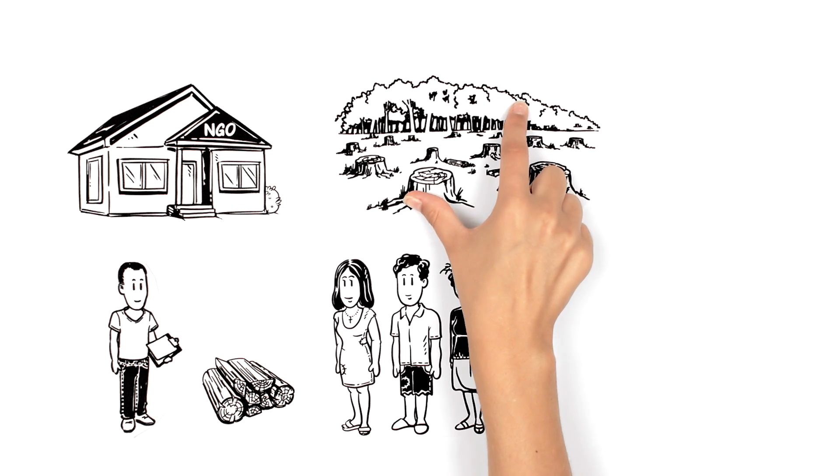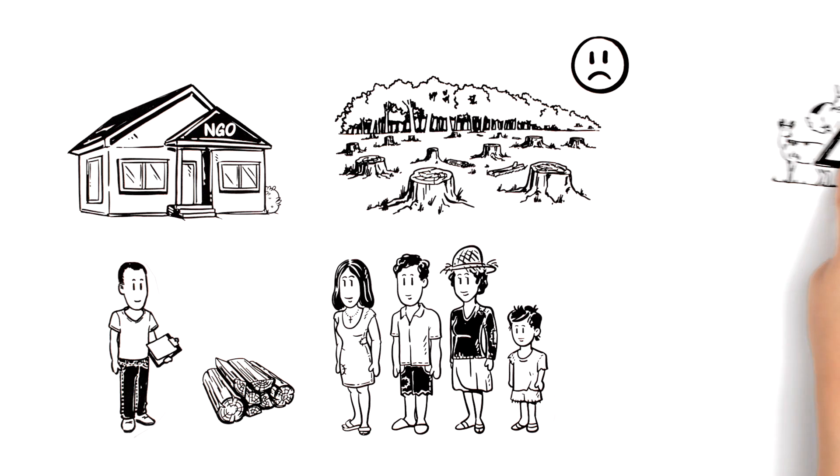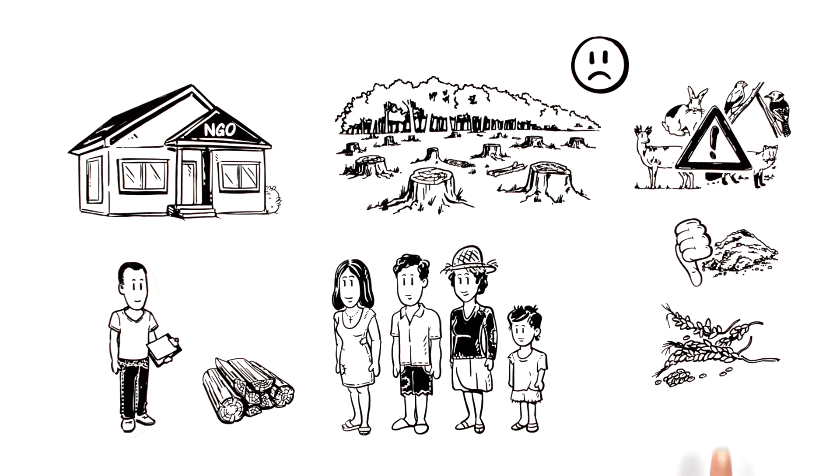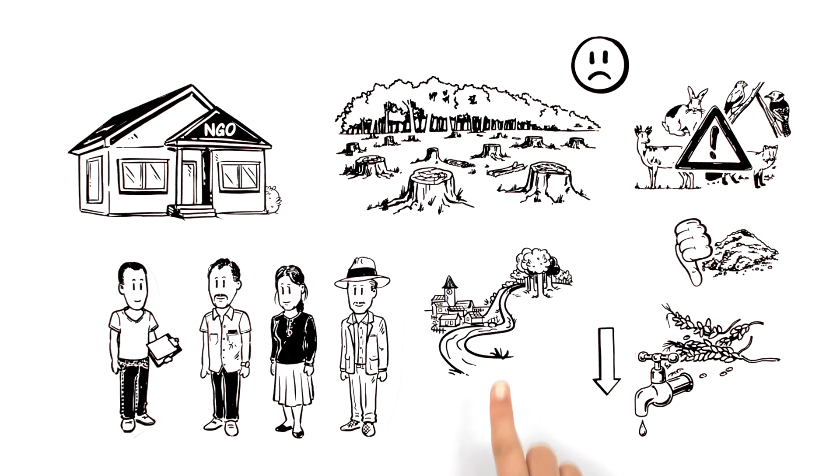This is causing deforestation, and the landscape is being damaged. Also, wildlife is endangered, the quality of the soil is diminishing, and crop production and water supply are being reduced, affecting the life of people in a downstream village.